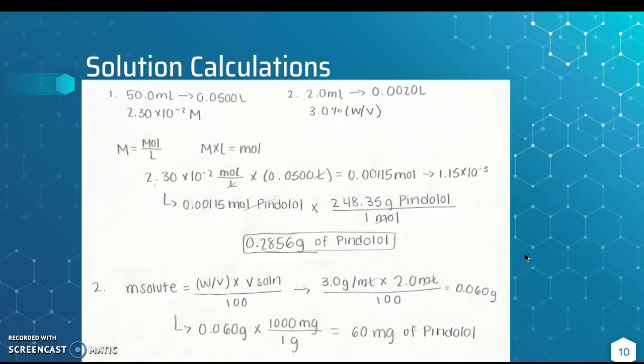For page 10 of this lab, we were given information that we wish to prepare 50.0 milliliters of a 2.30 times 10 to the negative 2M solution of our drug, and we must describe how to prepare the solution. We have to find the grams of Pindolol needed. I first converted milliliters to liters, then wrote out the equations needed. To find the grams of Pindolol, we multiply 2.30 times 10 to the negative 2 mol per liter by 0.0500 liters. It came out to be 0.00115 moles. Then we multiply our results by the molar mass of Pindolol over 1 mole. The moles cancel out and it gives us 0.2856 grams of Pindolol.